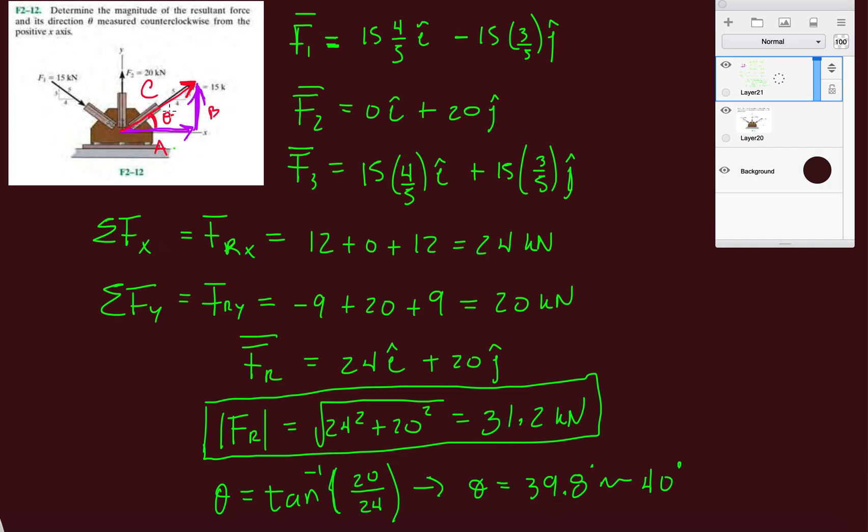That's measured kind of clockwise from the positive X axis, because we visualized it here. If we would have had it like this, like if we would have had FRX going this way, plus FRY going this way, and they would have given us this as 40, but because measured kind of clockwise from the positive X axis, we would have had to add that 180 to get that full angle.